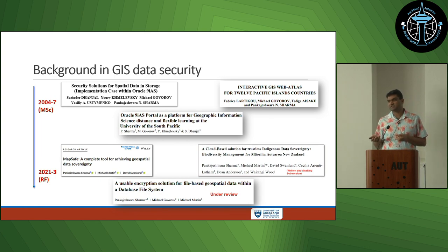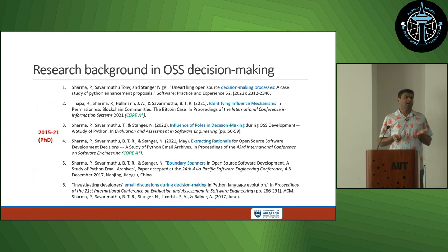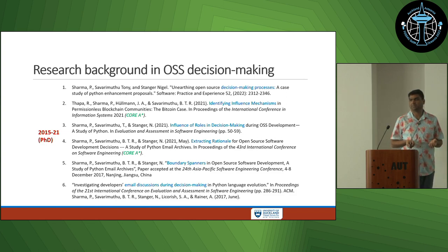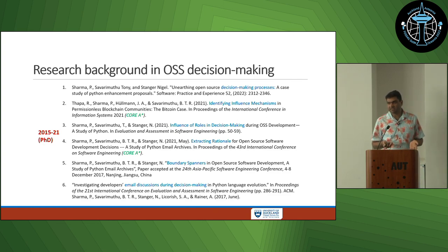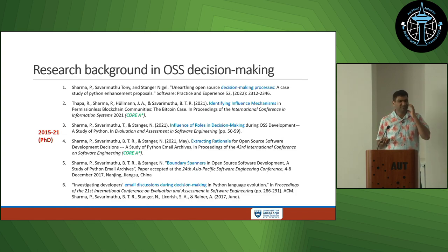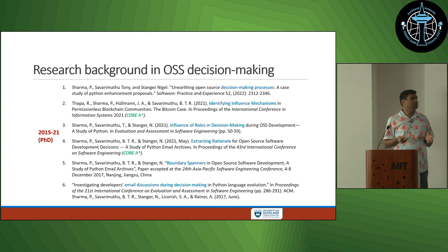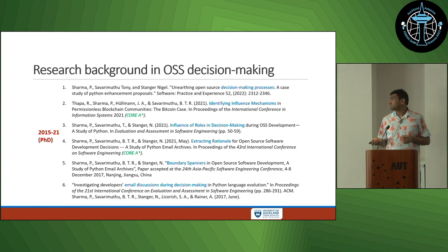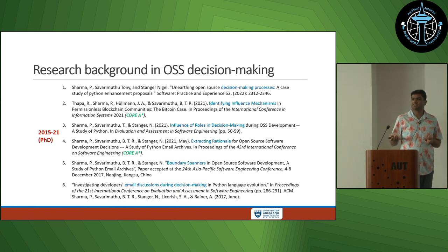I am presenting the first tool, MapSafe. In between my master's and my research fellowship, I was working as a PhD student at Otago, and my research was on open source software. I investigated different decision-making aspects within the Python and Bitcoin community — decision-making processes, the rationale behind decisions, whether one person makes the decision or it's more collective — and we investigated the influence mechanisms within the Bitcoin community. Based on my research, I released two open source projects: DmapMiner and RationalMiner, which can be used to extract these decision-making processes. We presented our work at the highest conferences in software engineering and information systems.